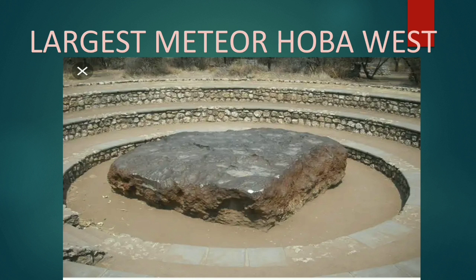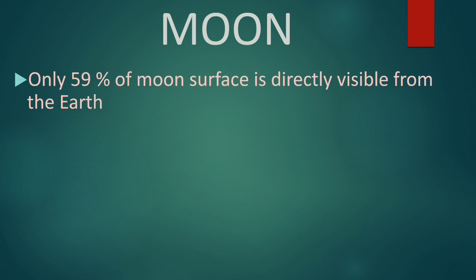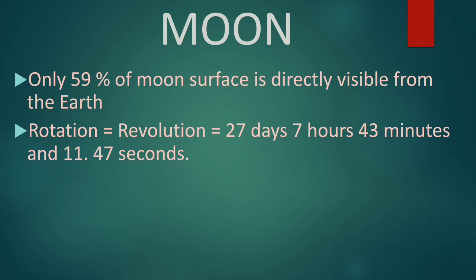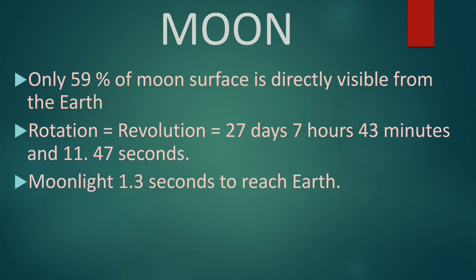Next we will discuss about the moon. Moon is the only satellite of our earth. Only 59 percent of the moon's surface is directly visible from the earth. The rotation of the moon equals its revolution — it takes 27 days, 7 hours, 43 minutes, and 11.4 seconds to complete one revolution or rotation. Moonlight takes around 1.3 seconds to reach earth.